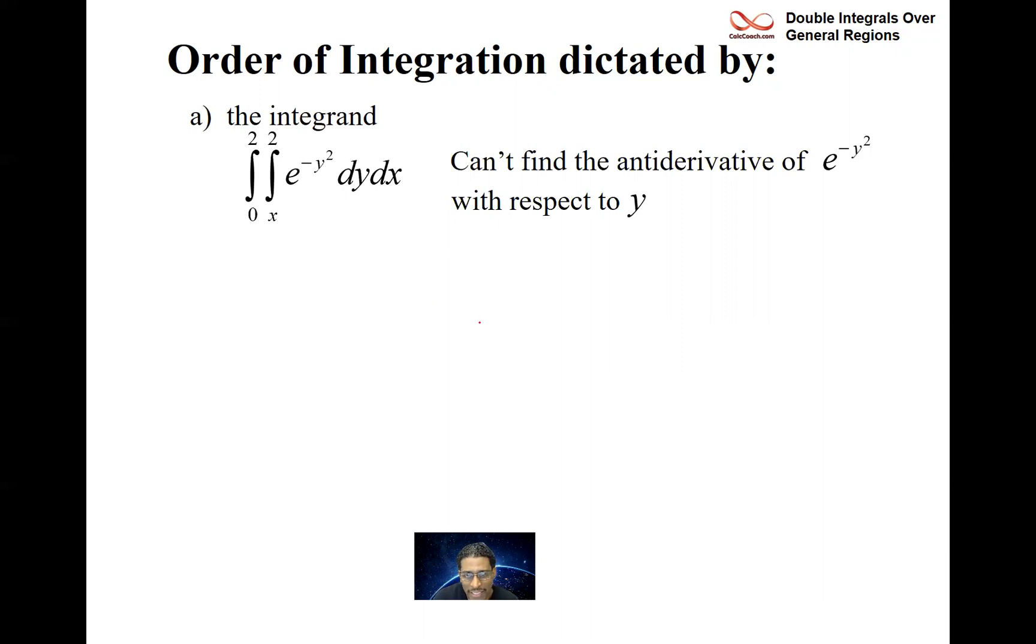What you would need is a friend. You would need a y as a multiplier because then you could do a u sub. If you had a y as a multiplier, you can let u then be the entire exponent. And then du can then be minus 2y dy and you could then solve for y dy by dividing by a negative 2.